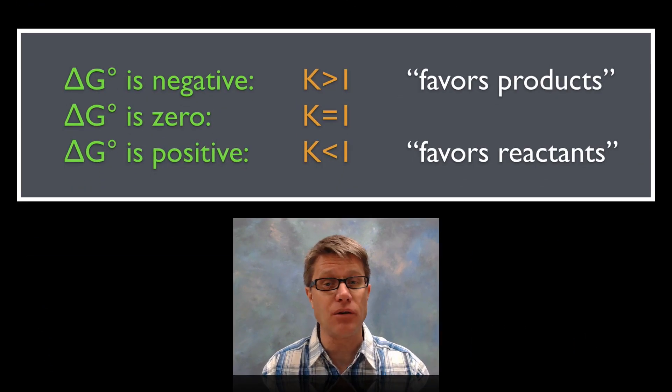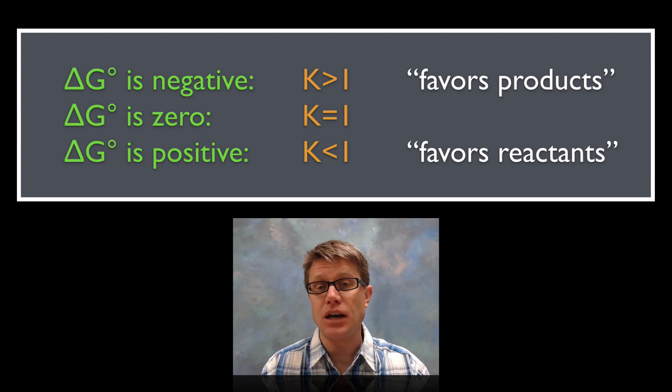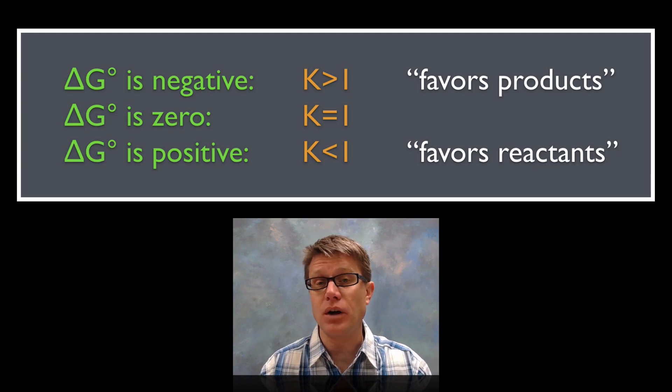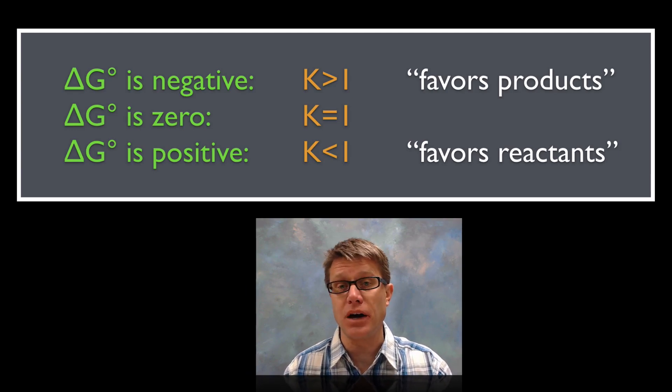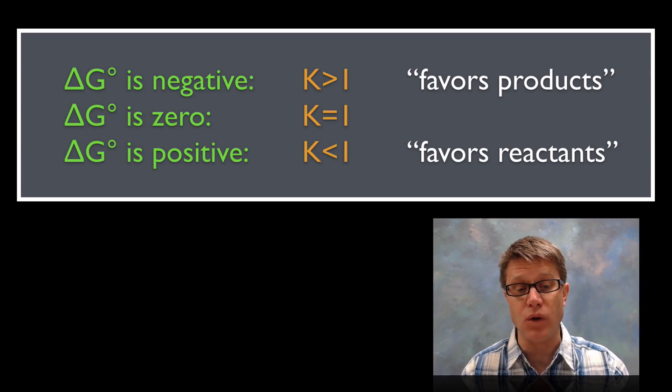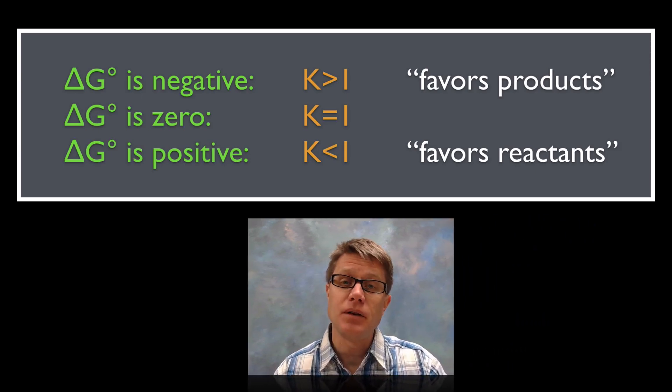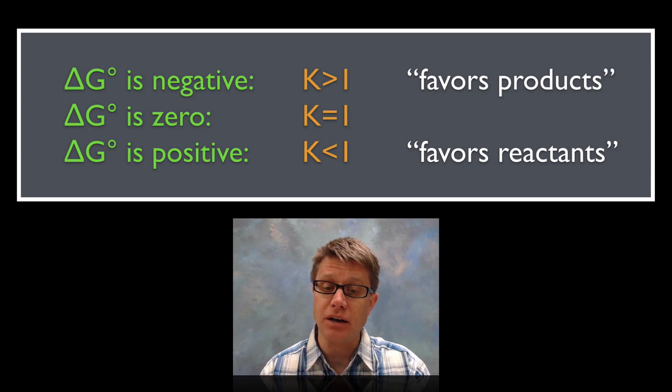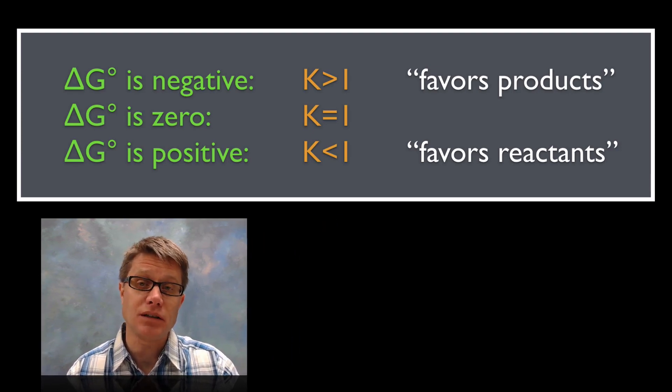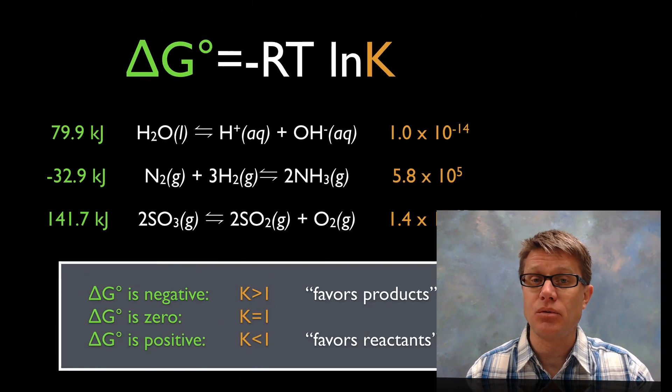And so if we were to summarize it again, how are these two tied together? Delta G is negative, then we've got a K equal to a value greater than 1. That's going to favor the products, or it's going to move more towards the right. If it's equal to 0, K equals 1. And then if delta G is going to be a positive value, our K value is going to be much less than 1, or it's going to favor the reactants.